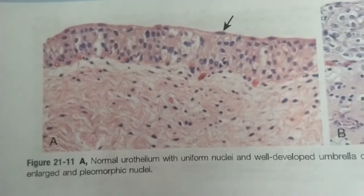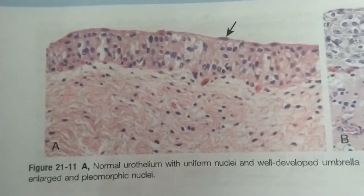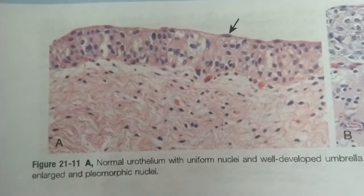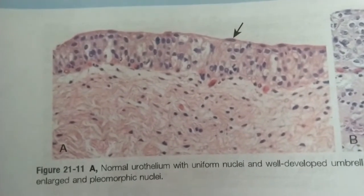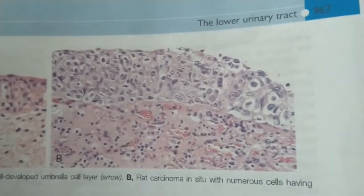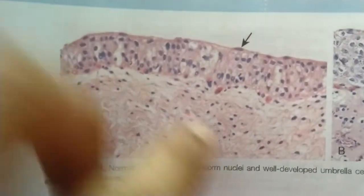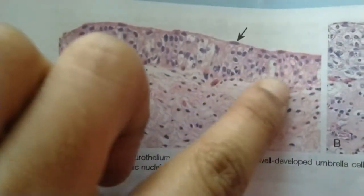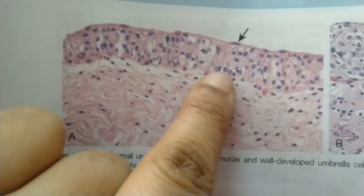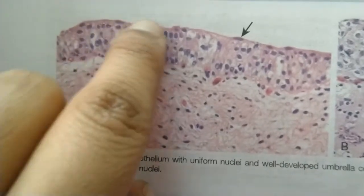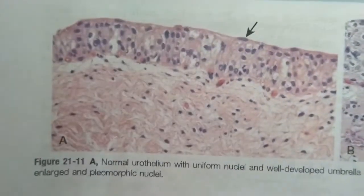In this transitional epithelium, you will see columnar-like cells in the first layer. This is the magnified view of the transitional epithelium, where in the basal layer you see the presence of columnar-like cells, and slowly as it grows upward, the topmost layer becomes the flattened cells or umbrella-type cells.